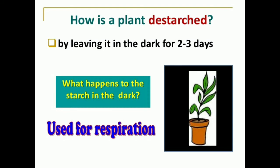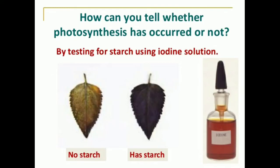A plant can be de-starched by leaving it in a dark room for two or three days. In the dark room, the remaining starch is used for respiration. To tell whether photosynthesis has occurred, we test for starch using iodine solution. If starch is present in the leaf, the leaf color changes to bluish-black. If the color does not change, it means starch is not available and photosynthesis has not occurred. As we know, if photosynthesis occurs, starch formation occurs, and starch reacts with iodine solution to give a bluish-black color.